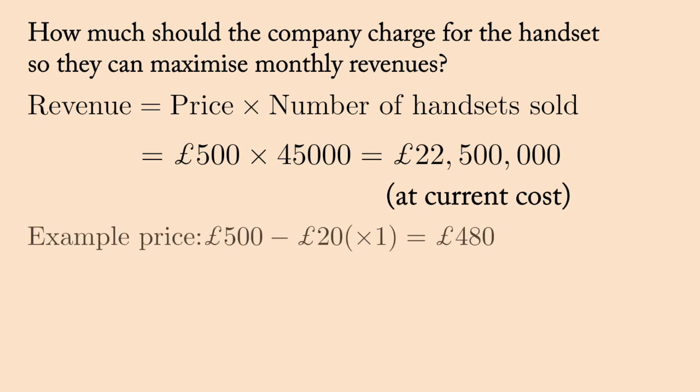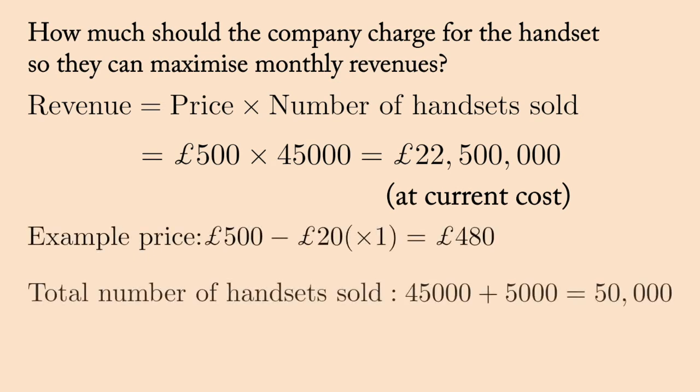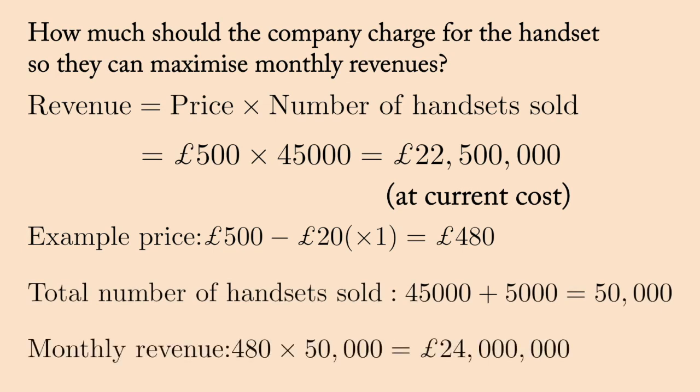This means if they sell a handset for a single £20 decrease in price, that is £480, then they would sell 50,000 handsets for a monthly revenue of £24,000,000. The question of setting the price of the handset, which would maximize the monthly revenues, depends on the number of £20 decreases. Algebra can help us in this situation.